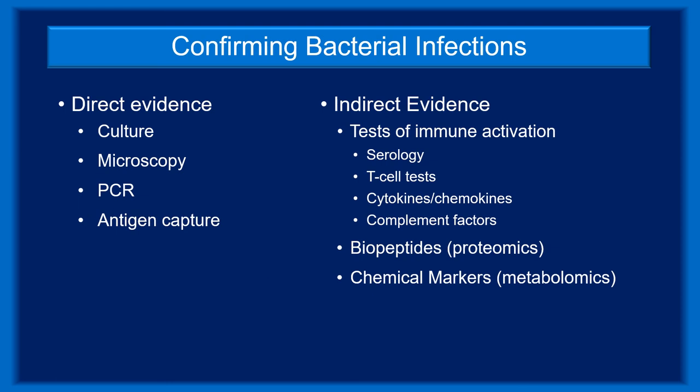Given that this program focuses on serologic testing in Lyme disease, let's review why serology and not other tests of infection. Most suspected infections are confirmed via a direct test, which specifically identifies the pathogen. Culture and microscopy identify intact pathogens, while PCR and antigen capture tests identify specific portions of an organism. Indirect tests generally measure changes in the host that occur as a reaction to the pathogen, including serology, T-cell activation tests, cytokines and chemokines, and complement factors.